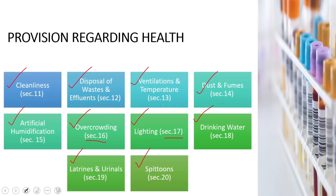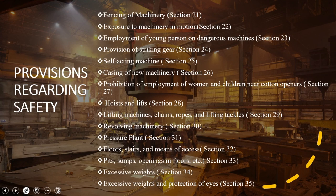Now we look into provisions regarding safety. Section 21 looks into the fencing of machinery. Section 22 looks into exposure to machinery in motion — for example, working with a CNC machine or a lathe. Section 23 deals with employment of young persons on dangerous machines — even if skilled, a less experienced person faces potential risk. Section 24 looks into the provision of striking gear and self-acting machines in section 25.